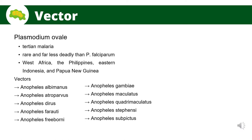Plasmodium ovale is a species of parasitic protozoa that causes tertian malaria in humans. In comparison to Plasmodium falciparum and Plasmodium vivax, it is extremely rare and far less deadly. It is limited to West Africa, the Philippines, Eastern Indonesia, and Papua New Guinea. Its known vectors are Anopheles albimanus, Anopheles atroparvus, Anopheles farauti, Anopheles maculatus, Anopheles quadrimaculatus, and Anopheles subpictus, among others.